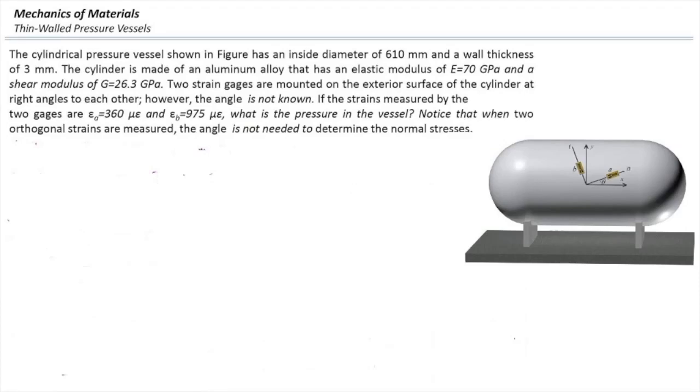The cylindrical pressure vessel shown in the figure has an inside diameter of 610 mm and a wall thickness of 3 mm. It's made from aluminum alloy that has the modulus of elasticity of 70 GPa and the shear modulus of 26.3 GPa.